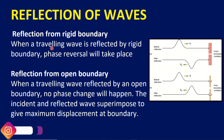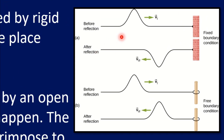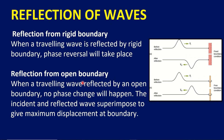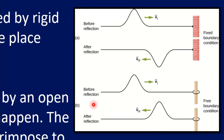When a traveling wave is reflected by a rigid boundary, phase reversal will take place. When a traveling wave is reflected by an open boundary, no phase change will happen.